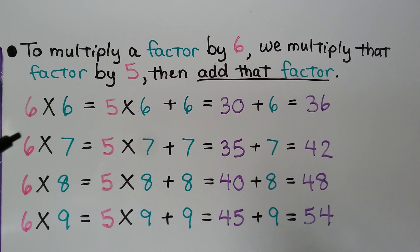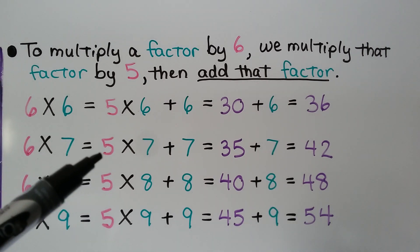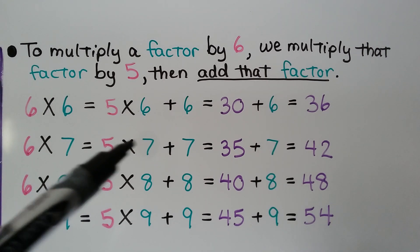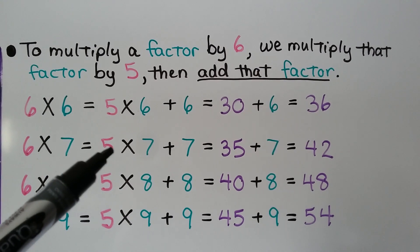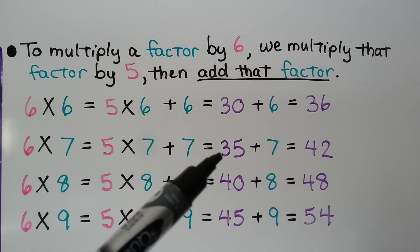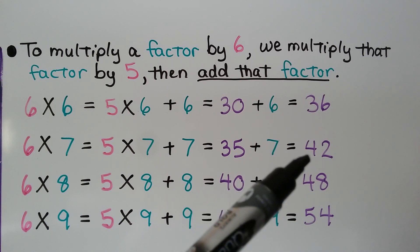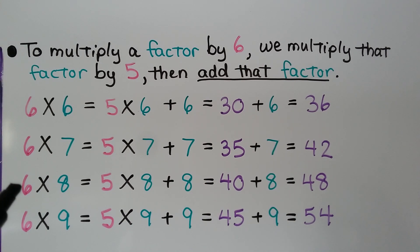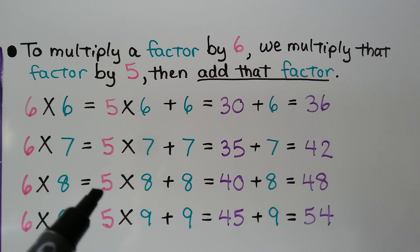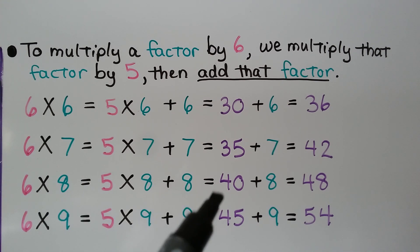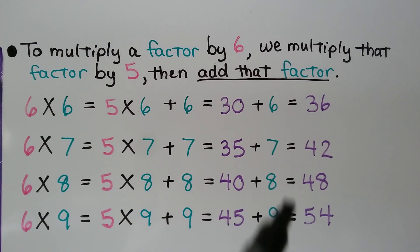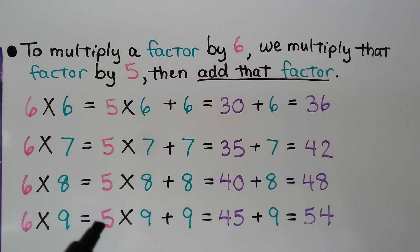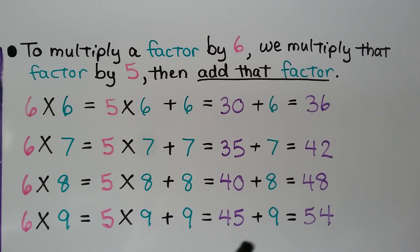This could be confusing, so let's try more examples. To do 6 times 7, we could do 5 times 7, then add another group of 7 to have 6 groups. That would be 35 plus 7, which is 42. We can do 6 times 8 by doing 5 times 8, then adding another 8: 40 plus 8 equals 48. We can do 6 times 9 by doing 5 times 9 and then adding another group of 9: 45 plus 9 equals 54.